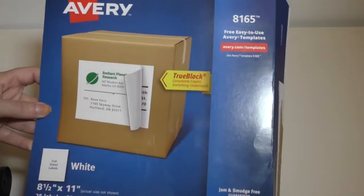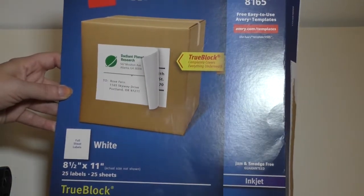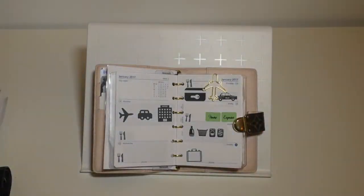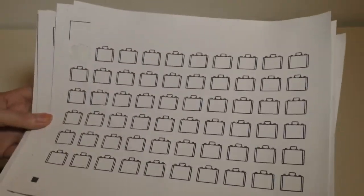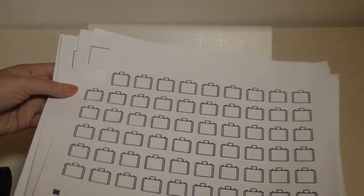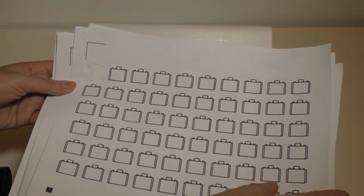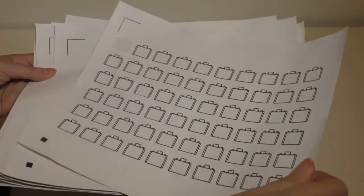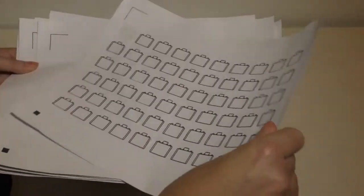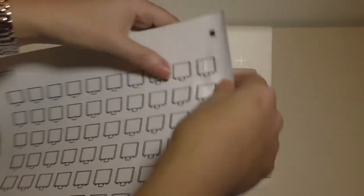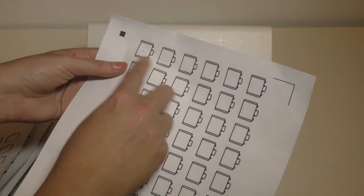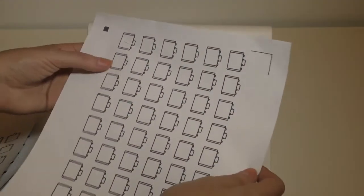What I did was I got Avery full-size labels and I printed using print and cut. But here's what happened. Here's an example of my little suitcase—the trace feature worked but after a couple of tries. This is the example of it not working, where it started to cut in between the lines here.